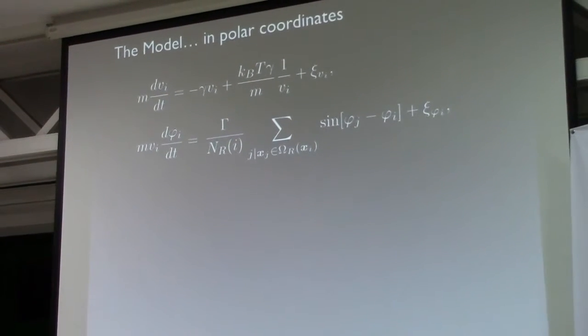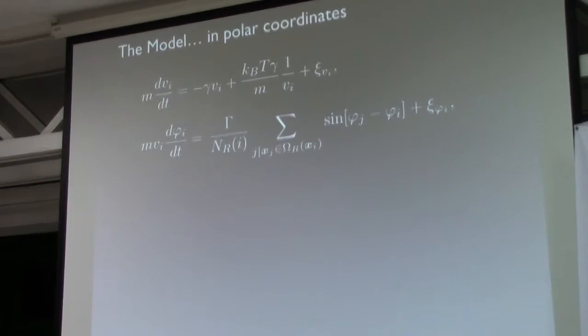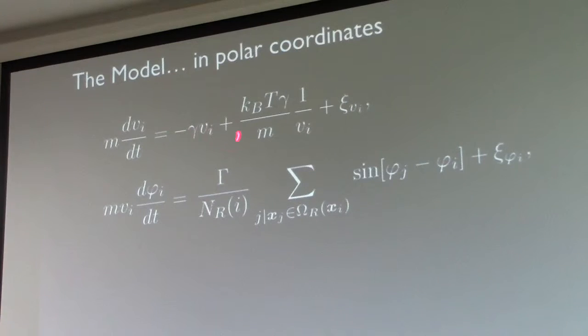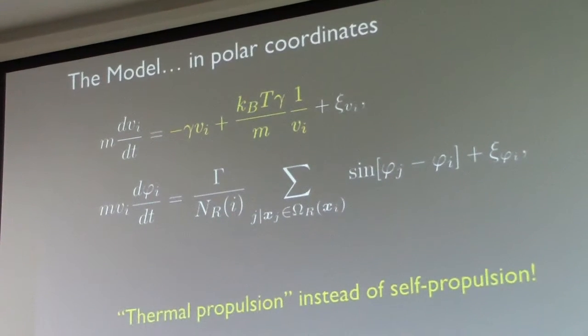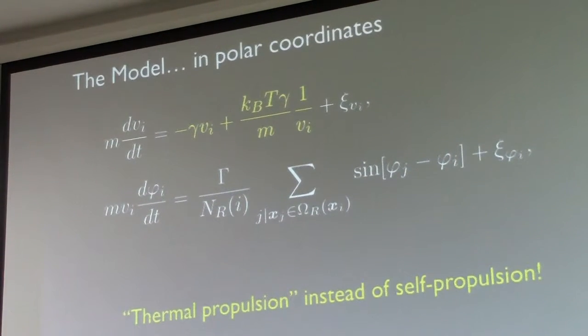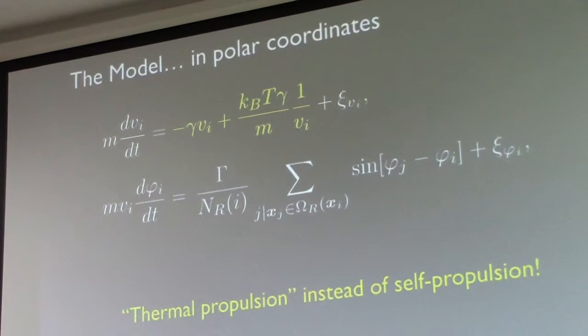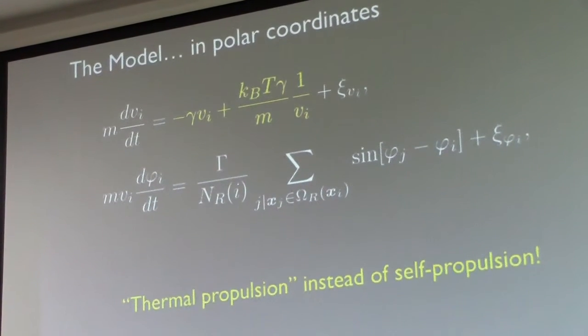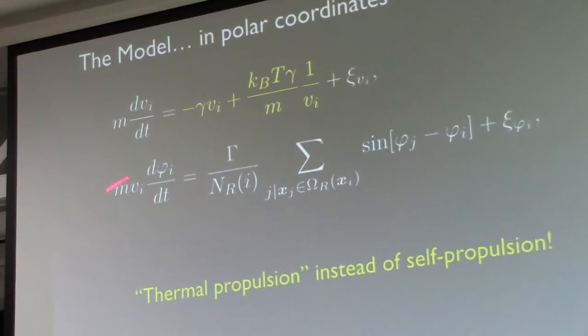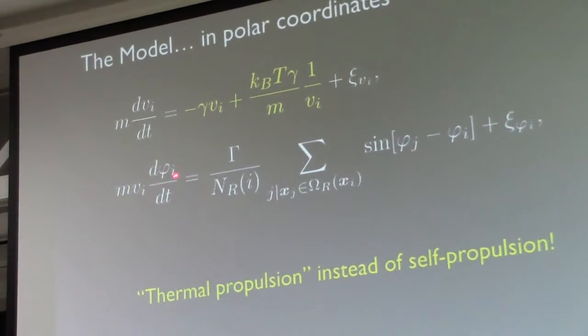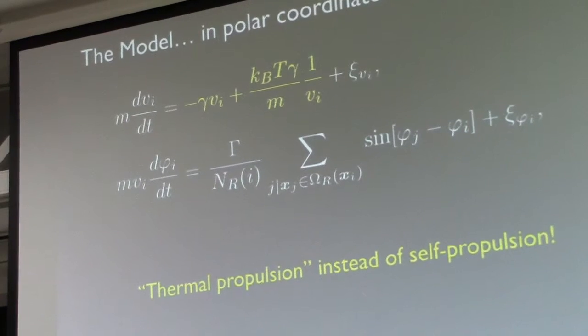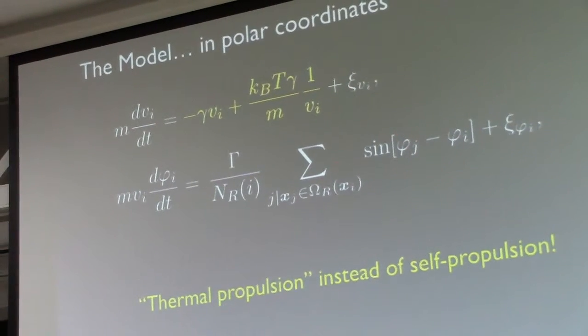Our model can be written in this form in polar coordinates. For the velocity, we have these two terms that act as thermal propulsion. In some other models, this term would be like an overdamped friction term that drives the speed to a given value. The equation for the angle resembles the Kuramoto model of synchronization.